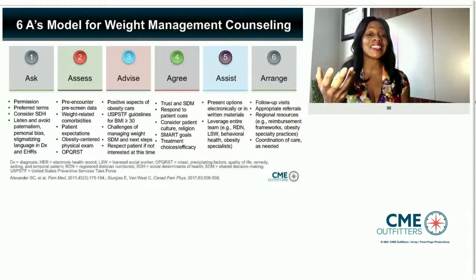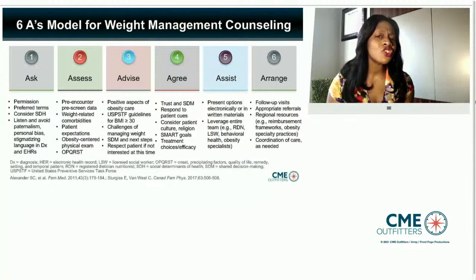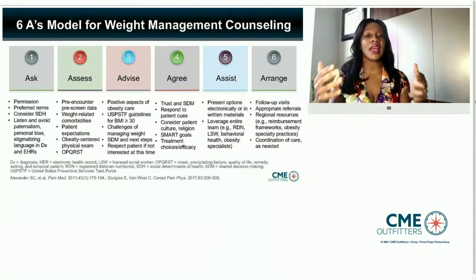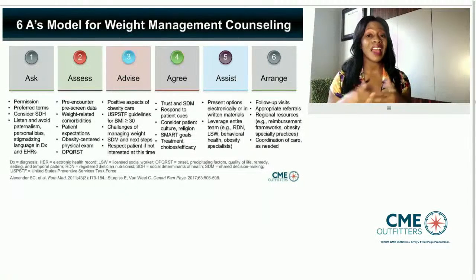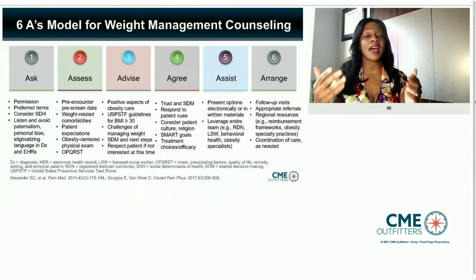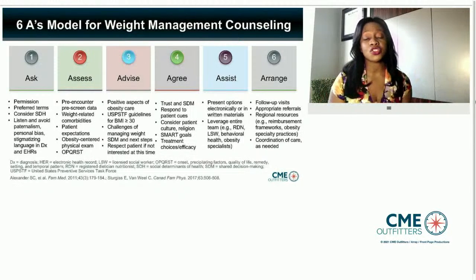After asking, we want to assess the patient — look at the pre-encounter, weight-related issues, determine the patient's expectations, and make sure our exam is centered on a patient with obesity. We want to look for things like acanthosis nigricans and hyperinsulinism. Then we want to advise — look at the positive aspects of providing care, use the US PSTF guidelines, pay attention to how BMI cutoffs may differ by race and ethnicity, and recognize this is a chronic disease requiring chronic therapy.